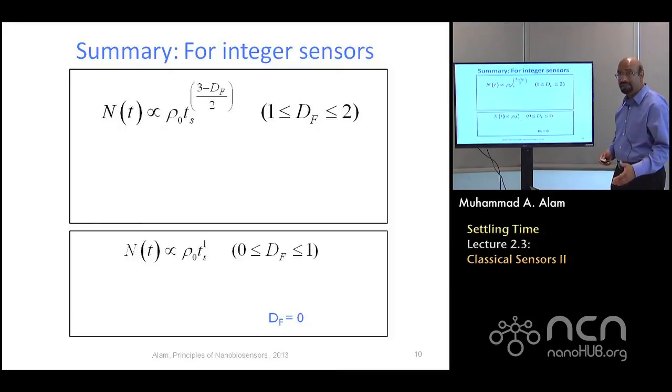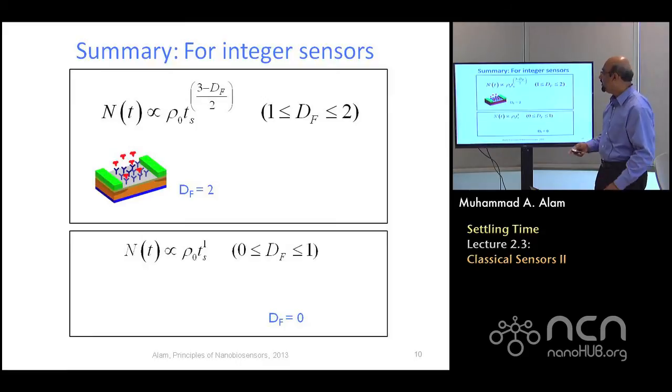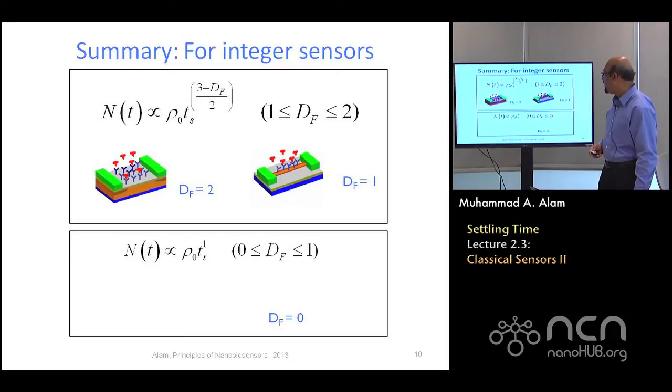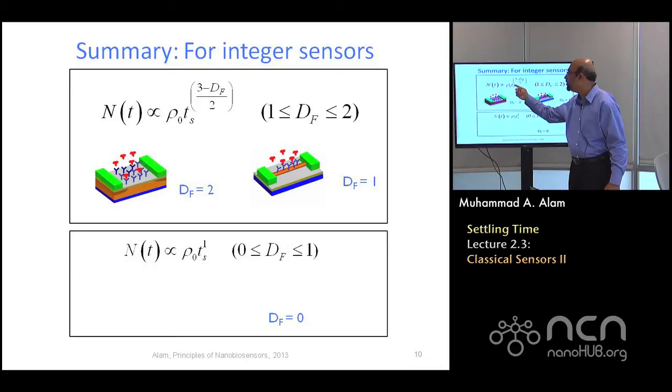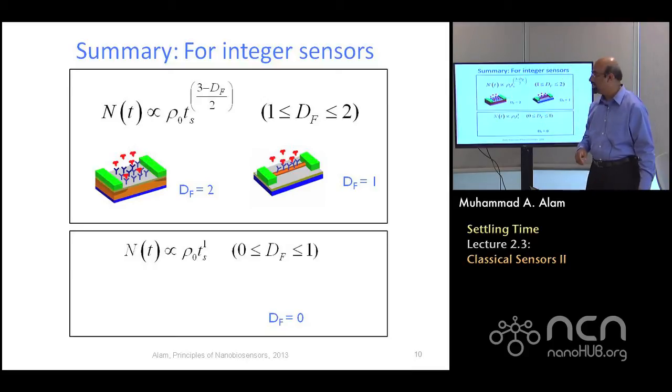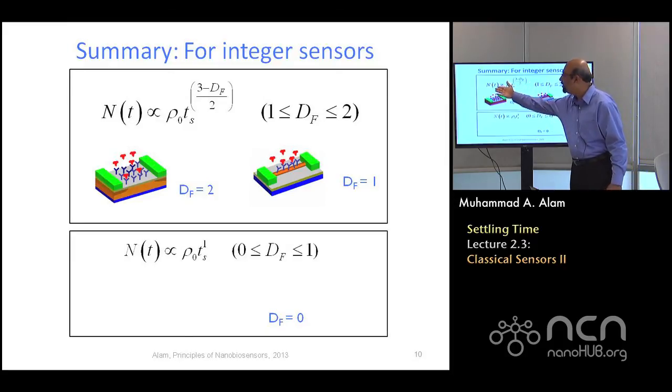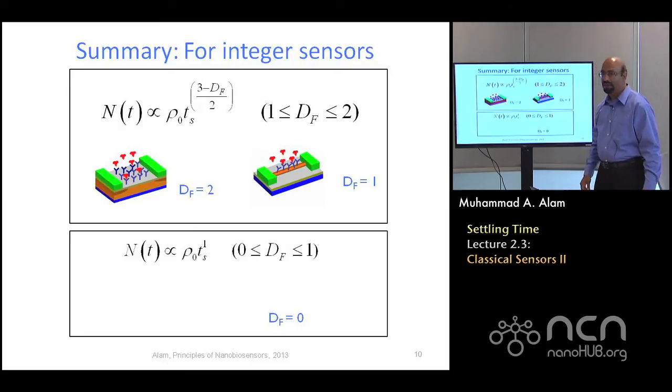So, here is the summary of the types of response time that we have captured, the number of molecules that you capture by sensors of different nanostructures or surfaces. If you have a planar sensor, or if you have a nanowire sensor, in both cases, you can use a very simple relationship where the df is a fractal dimension, rho naught is the analyte density in order to calculate the number of particles captured for a given amount of time.